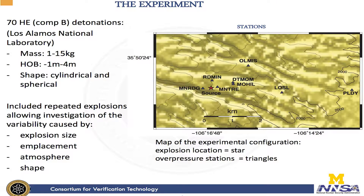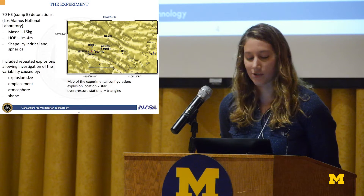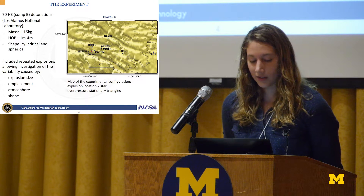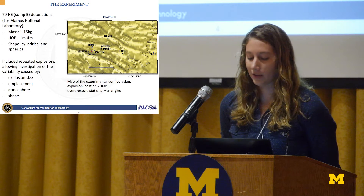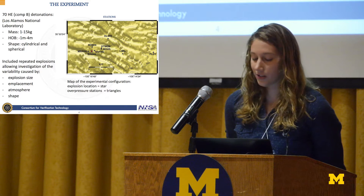The data for our experiment came from a series of 70 high explosive detonations that took place at Los Alamos National Laboratory. The yields were very small — in this case, 1 to 15 kilograms, which is tiny. The height of burst and depth of burial ranged from minus 1 meter buried below the surface to 4 meters above the surface, and the shape and size of the charge was also varied. This series included repeated explosions, which allowed for investigations into variability of air blast parameters due to various factors like explosion size and atmospheric conditions.